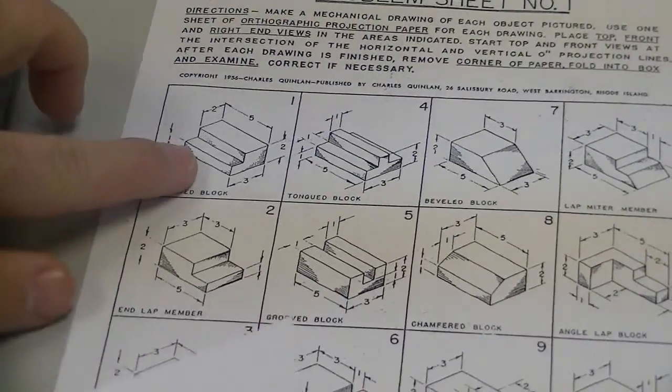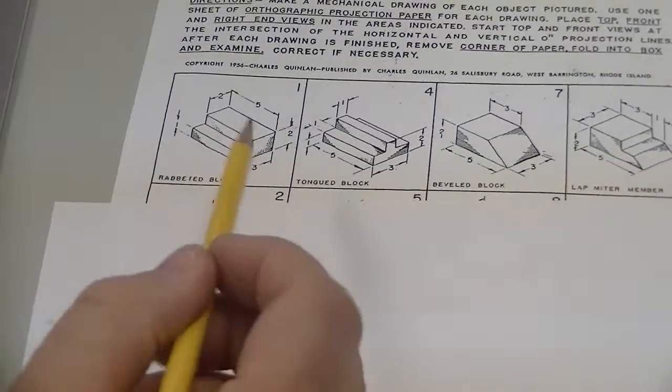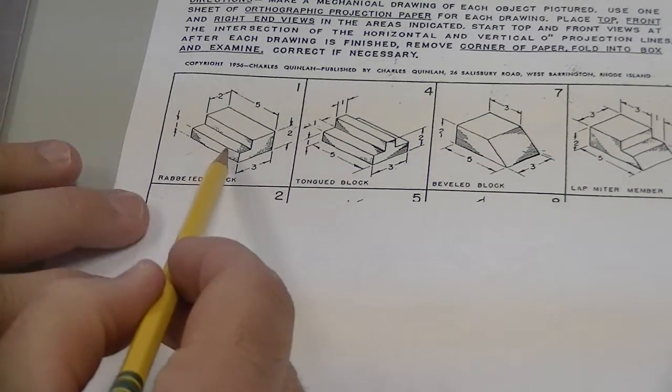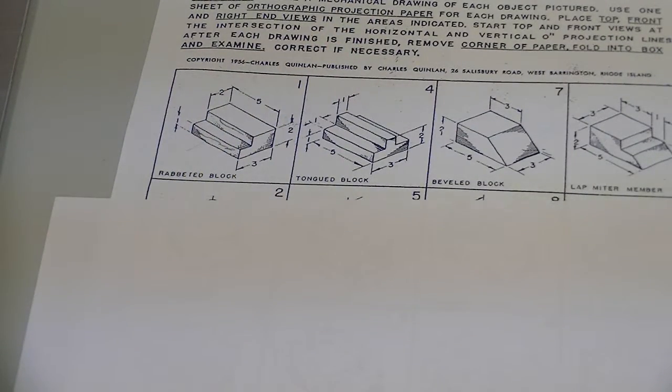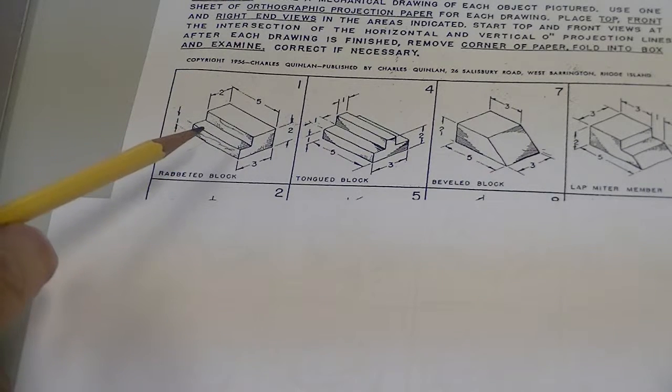Looking at number one, the front view is anything that faces off this way, so I'll highlight the front view. The front view is what you want to draw first. There are dimensions here given, but you do not need to draw each one of these to the proper dimension. What I am asking is that you draw them proportionally.